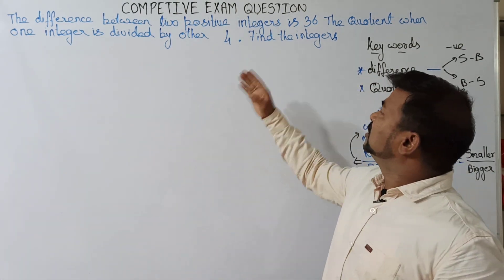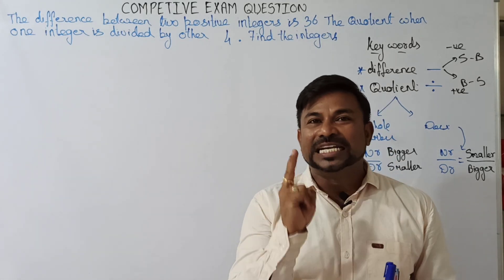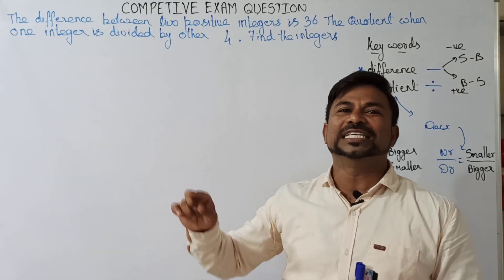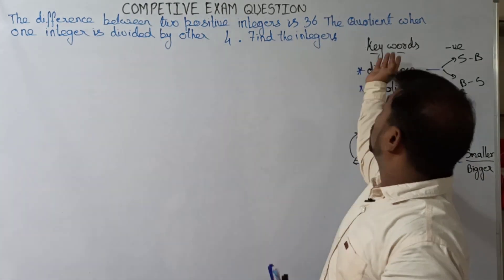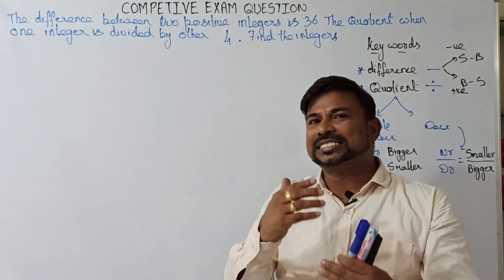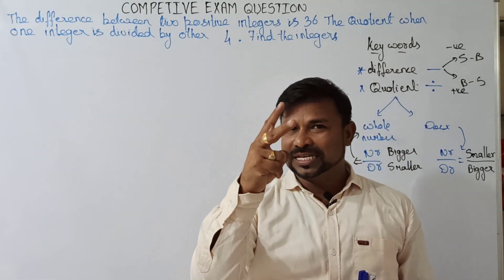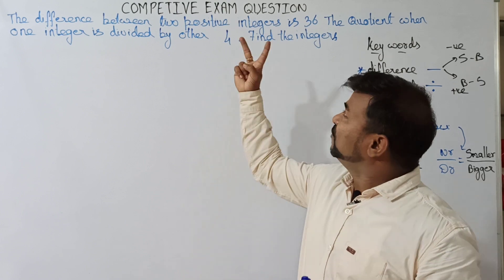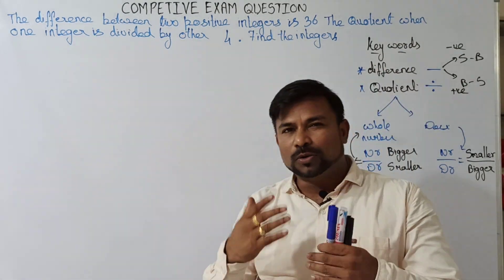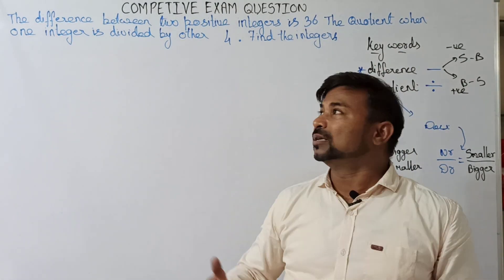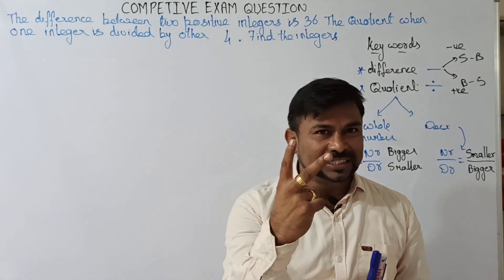The difference between two positive integers is 36. The quotient when one integer is divided by the other is taken as four. He is talking about two integers and has given us two clues.